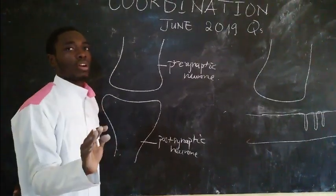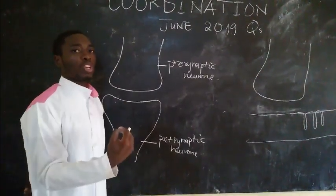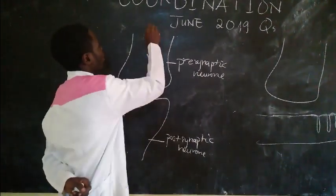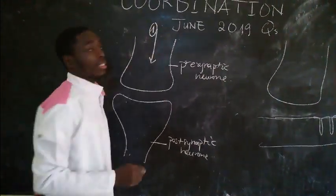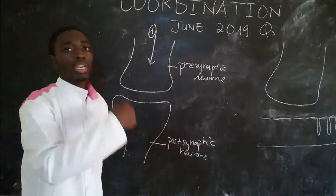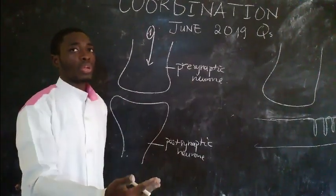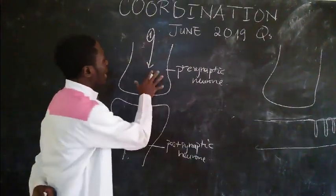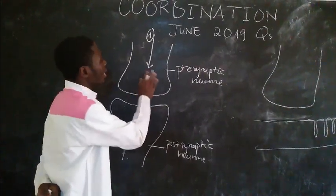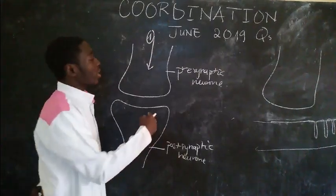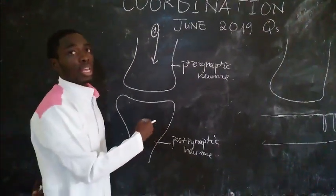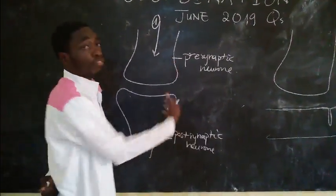The first stage in the transmission of a nervous impulse is the arrival of the impulse. When the impulse — an action potential generated as we saw in the previous video — arrives at the presynaptic neuron, it causes a change in the membrane potential of the presynaptic neuron.